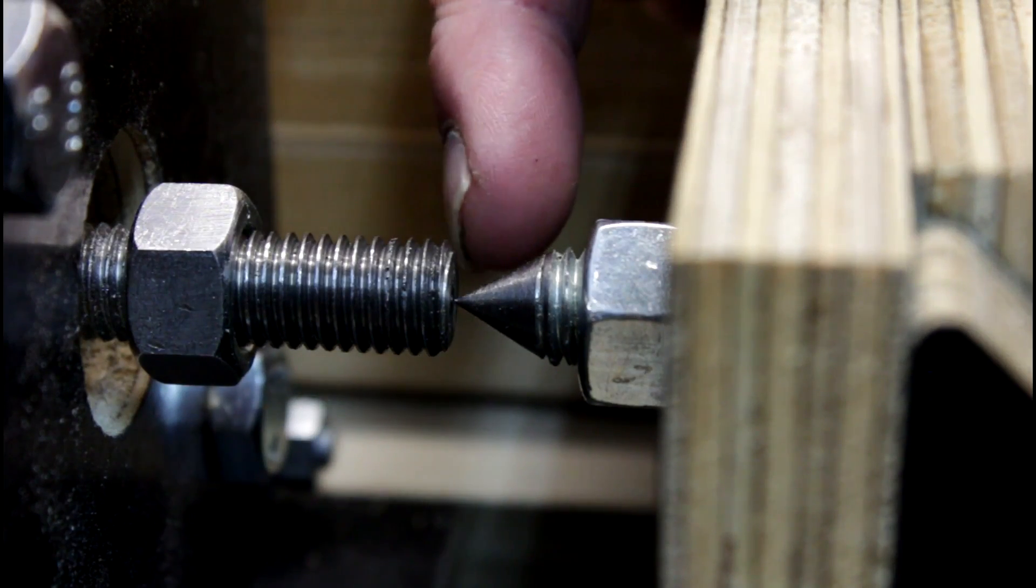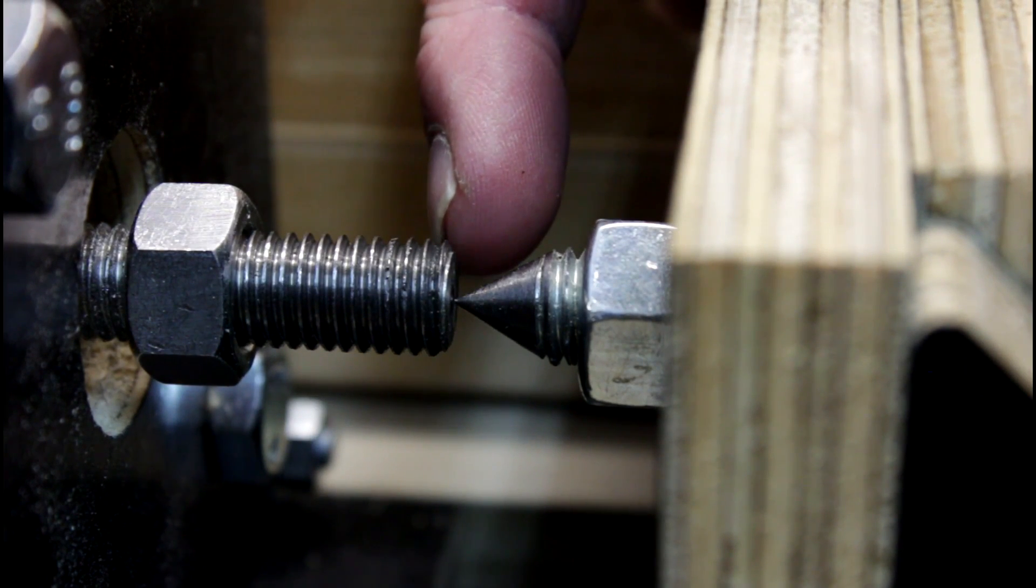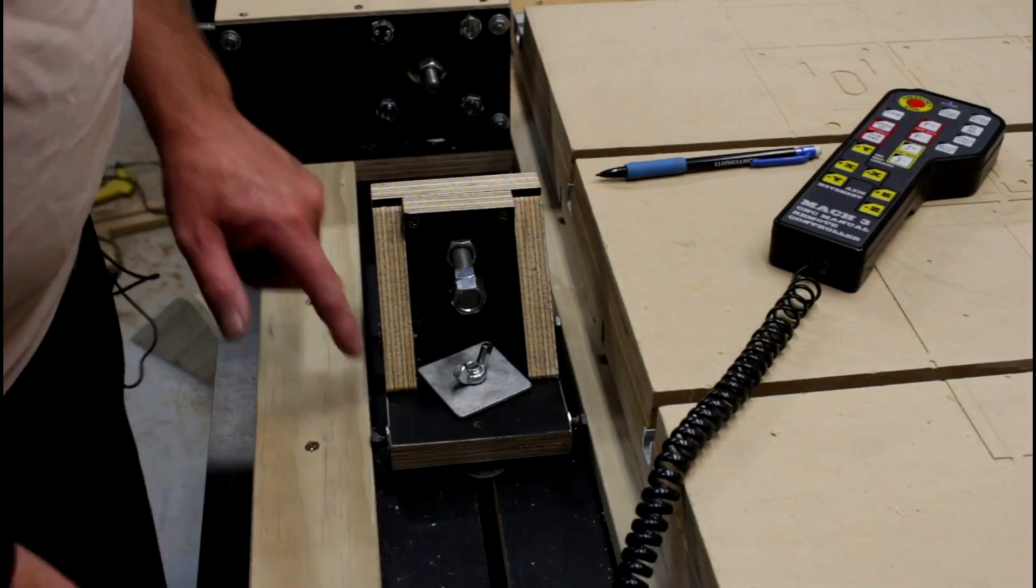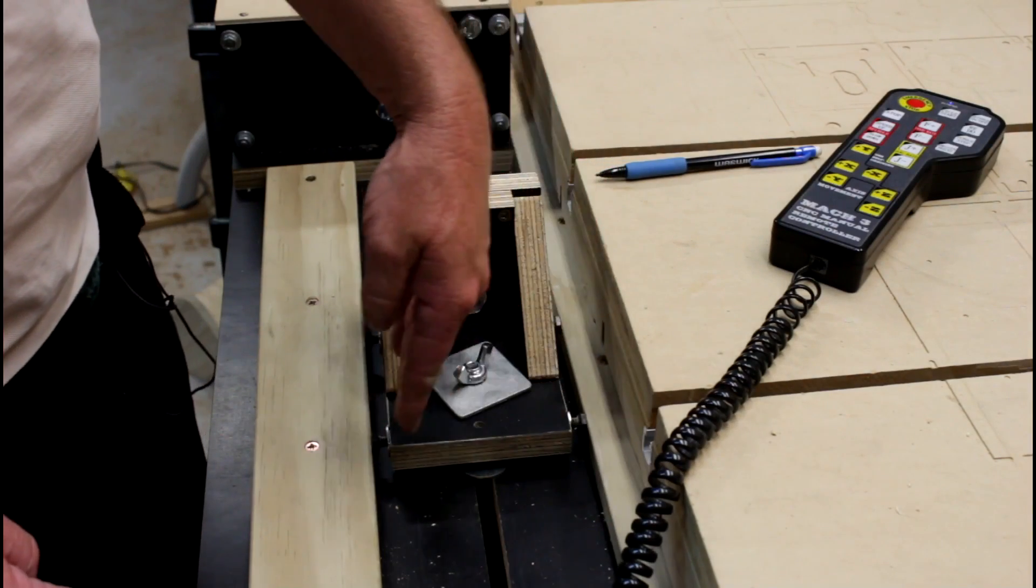So this is what we're trying to achieve. Getting the center of the tailstock, dead center of the headstock shaft. To help us achieve this, we can use these bolts here to adjust our side to side position.